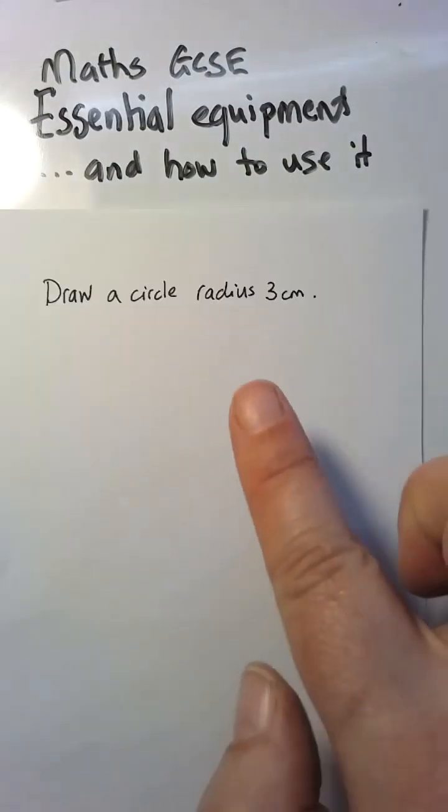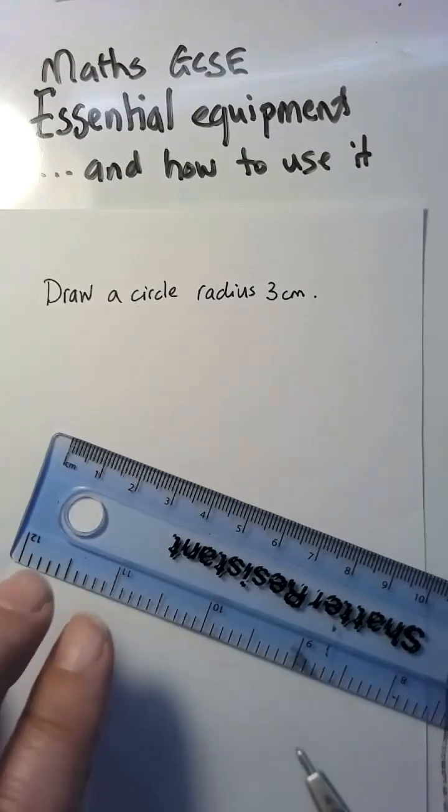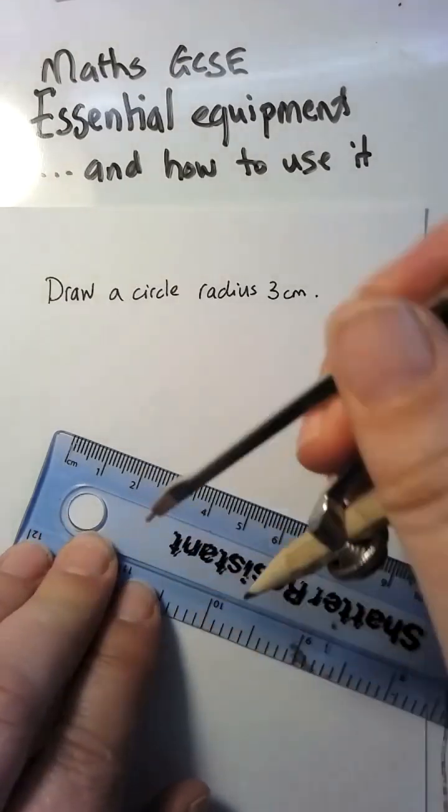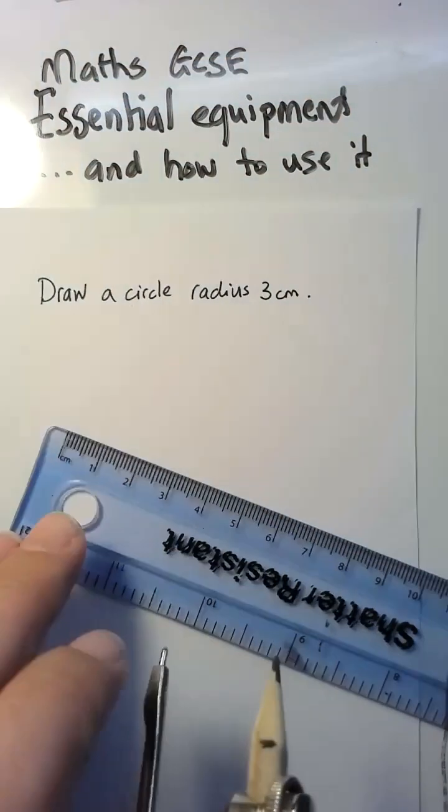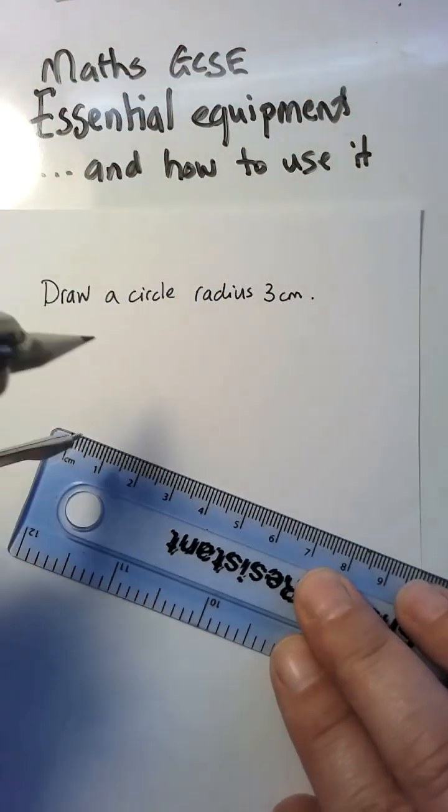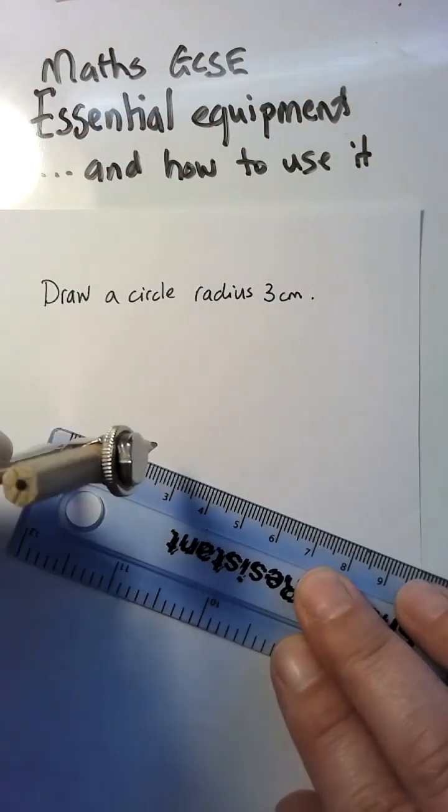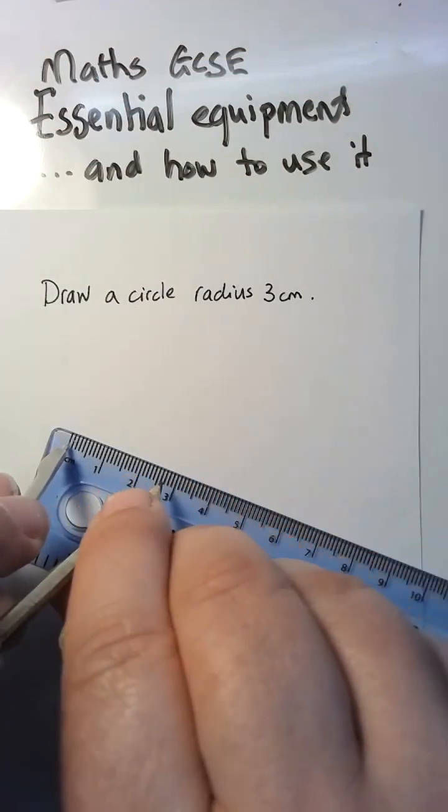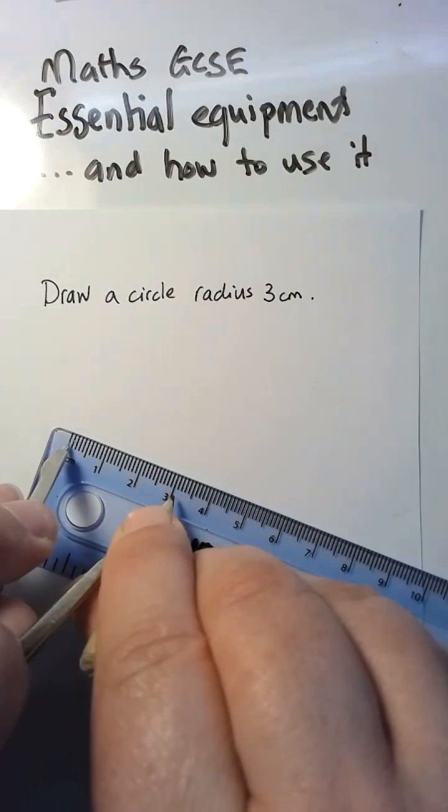If I need to draw a circle of radius three centimeters, I need a ruler. However, I need to measure. I quite like putting my point actually digging it into the ruler, so it actually stays still if I wobble it. So, then what I need to do is I need to move this pencil up to here.